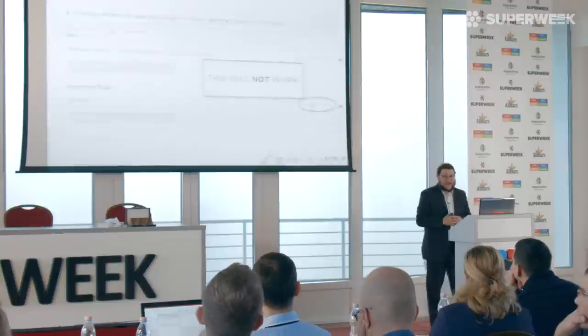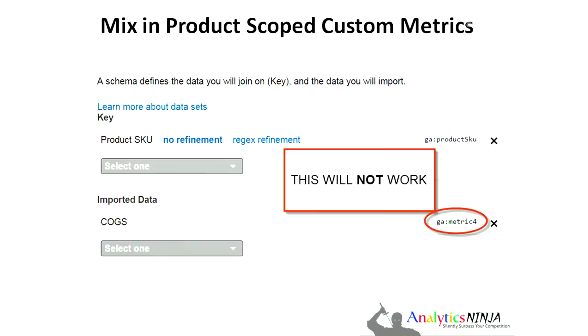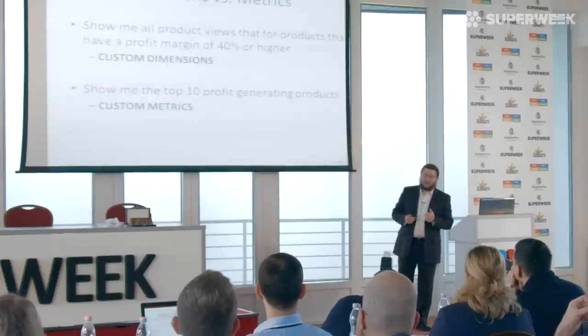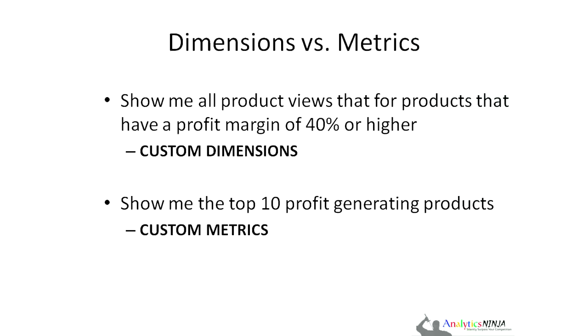What you cannot do and will not work is this: you can't just upload your custom metrics. You can upload custom dimensions that will map, but uploading a custom metric — every time the product is viewed, it will increment. So every product view you'll suddenly see 85 billion for the amount of profit for a particular thing. It just doesn't work in the product scope. So it's at point-of-sale that you'll want to see your profit metrics. Custom dimensions say: show me all product lines that had a profit margin of 40% or higher. Custom metrics say: show me my top 10 profitable products.